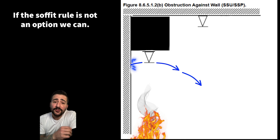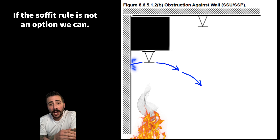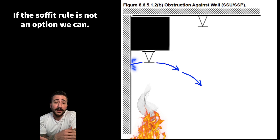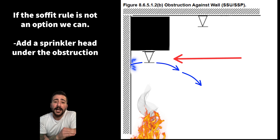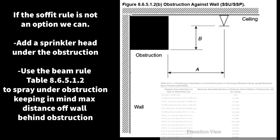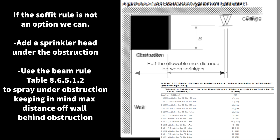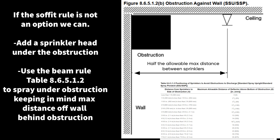If the Soffit Rule is not an option — maybe pushing the sprinkler head further off the side of the obstruction puts us too close to another sprinkler head, or maybe the obstruction is over 30 inches — in that case we put a head underneath the obstruction. Or you can always try to use the Beam Rule to spray under the obstruction, keeping in mind the max distance from the wall behind the obstruction to the center of the sprinkler head has to be half the max distance depending on the head you're using and the hazard occupancy you are in.